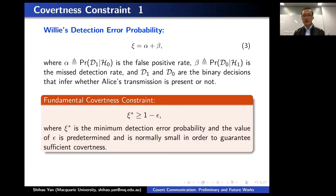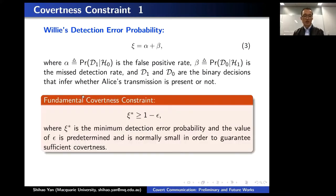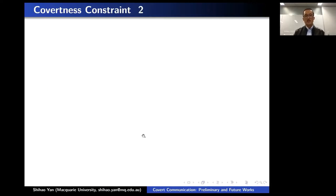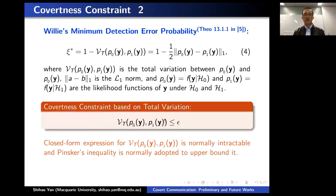If Willie is randomly guessing without receiving anything, the detection error probability will be close to one. That's why the fundamental covertness constraint requires the minimum detection error probability to be greater than or equal to 1 minus epsilon. Alternatively, based on the relationship between the minimum detection error probability and the total variation between the two likelihood functions — the null hypothesis and alternative hypothesis — we can use another covertness constraint based on the total variation.